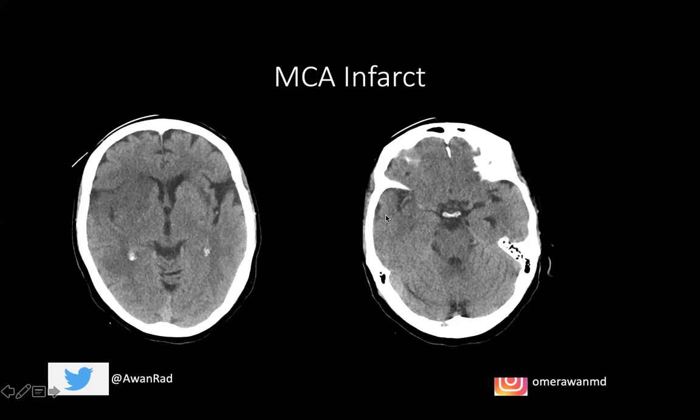An MCA infarct classically presents with contralateral weakness and sensory loss in the face and upper extremity — much more than the lower extremity. So with a right MCA infarct, the patient presents with left facial weakness, sensory loss, and left upper extremity — arm, elbow, hand — weakness and sensory loss. They may also have homonymous hemianopia, which is a visual field defect involving the two right halves or two left halves of the visual field. If the dominant hemisphere (the left side) is involved, the patient may have aphasia — difficulty speaking.